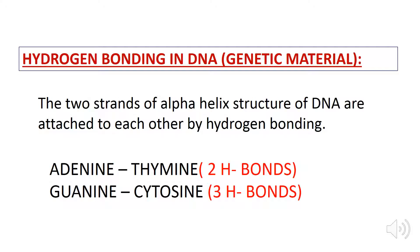Hydrogen bonding in DNA: the two strands of the alpha helix structure of DNA are attached to each other by hydrogen bonding. Adenine makes two hydrogen bonds with thymine, whereas guanine makes three hydrogen bonds with cytosine.